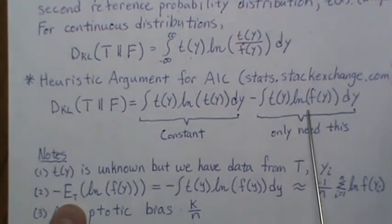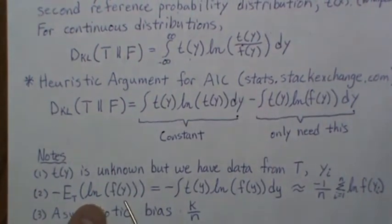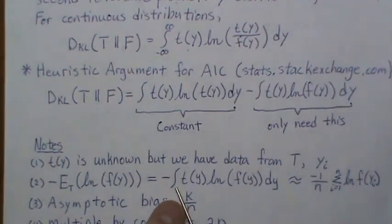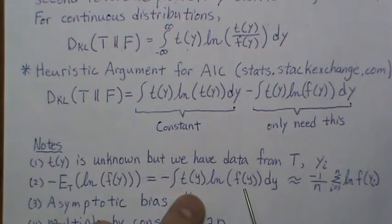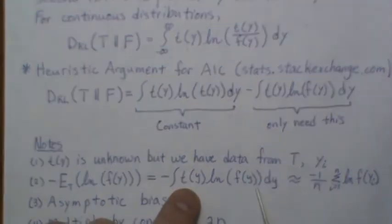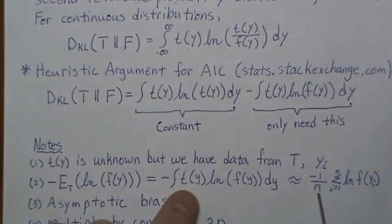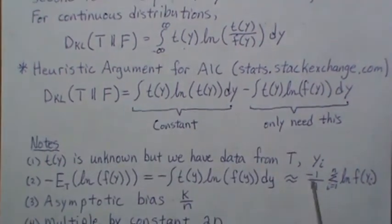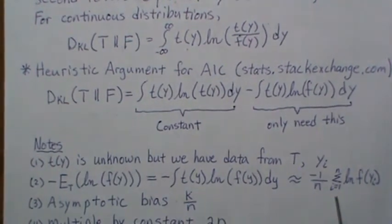This piece is the expected value of log F(Y) under T, because when you take the expected value, you take it times the probability density function integrated over all possible values. This is just saying it's the average log of F(Y) with this distribution. If we look at the sample estimate, it's the sum of these logs divided by N.